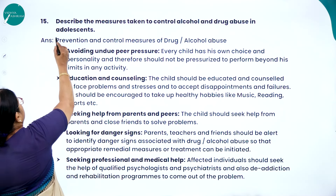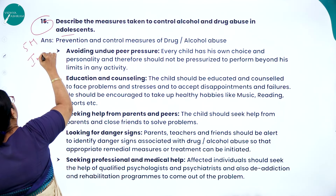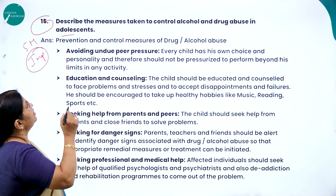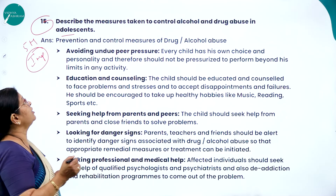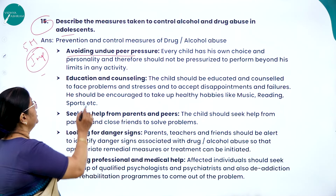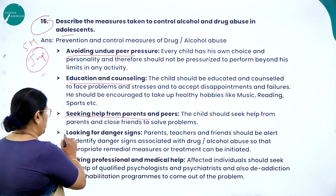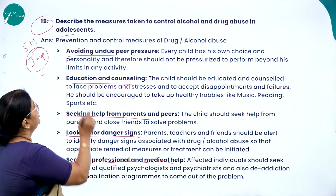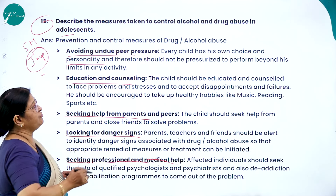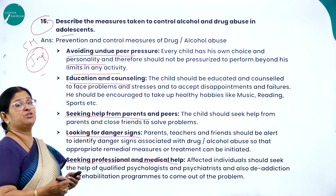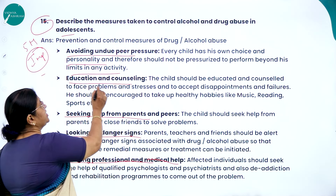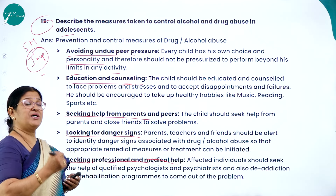Describe measures taken to control alcohol and drug abuse in adolescence — this is a five-mark question. Prevention and control measures include: avoiding undue peer pressure, education and counseling, seeking help from parents and peers, looking for danger signs, and seeking professional and medical help. Regarding peer pressure: every child has his own choice and personality and should not be pressurized to perform beyond his limits in any activity.